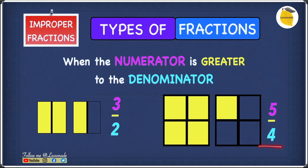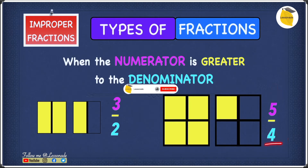Let's move to this one. Here we have 5 over 4. The numerator, which is 5, is definitely greater than the denominator, which is 4. So 5 over 4 is also an improper fraction.